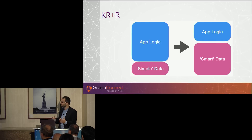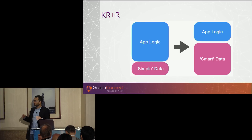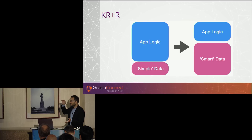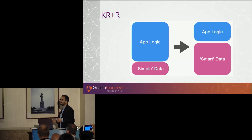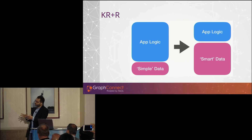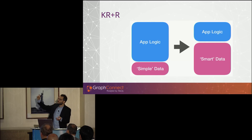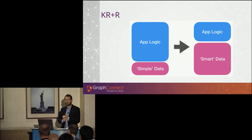What's the rationale behind knowledge representation? A very simplified view is that typically in any solution you will find your application logic being a fat component, and your data tends to be simple data. The idea with knowledge representation is to make your data smarter — in a way that you can move some of the application logic out of it and make it data. By doing that, you can reuse that knowledge. You don't have to replicate it in any application. You make it explicit.